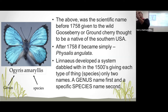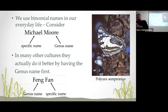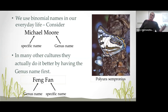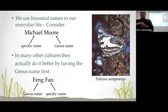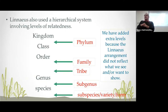This system had been dabbled with in the 1500s — so 200 years earlier, people had come up with the idea that you could name things using just two names. And of course we use binomial names ourselves. That's me — the genus is Moore and the specific name is Michael. I can even be more specific by putting my middle name in. It's interesting that many cultures on earth put the genus name first, which fits even more tightly into this binomial naming system.